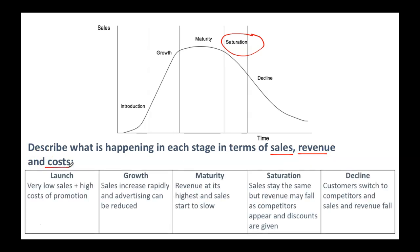Here's a summary. In the launch you've got very low sales — not many people know about it — but high costs of promotion because you're trying to get the brand name out there and get people interested. During growth, sales are increasing really rapidly, so you've got a really big increase in revenue. Advertising may start to be reduced at this point, so you might see costs going down a little bit, depending on the product.